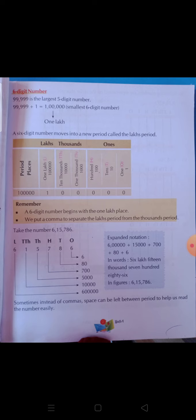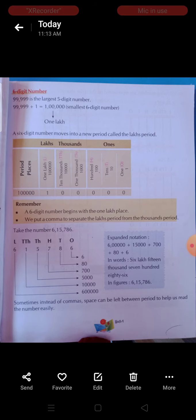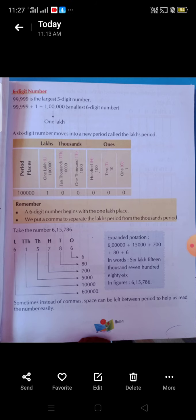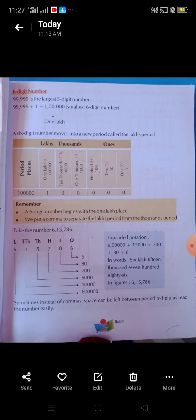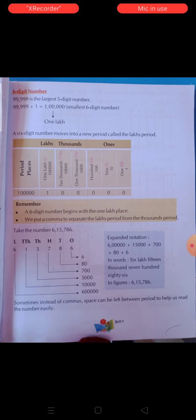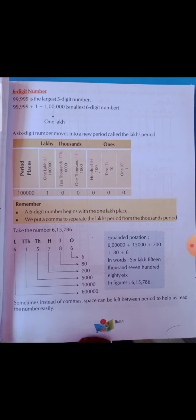Take the number six lakh fifteen thousand seven hundred eighty-six. Let us make a place value chart. Put the six in the ones place, the eight in the tens place, the seven in the hundreds place, the five in the thousands place, the one in the ten thousands place, and the six in the lakhs place.